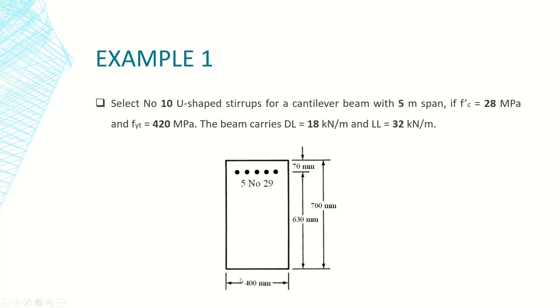The cross-section has 400 millimeters width, the parameter B, 700 millimeter depth which is H, 630 millimeters which is d, and 70 millimeters which is the cover to the centroid of flexure reinforcement. Since this beam is cantilever, it will be reinforced by flexure reinforcement at the top side of the beam since the tension will exist there.